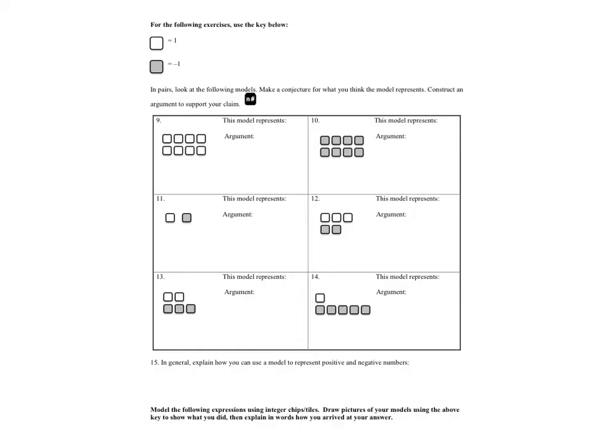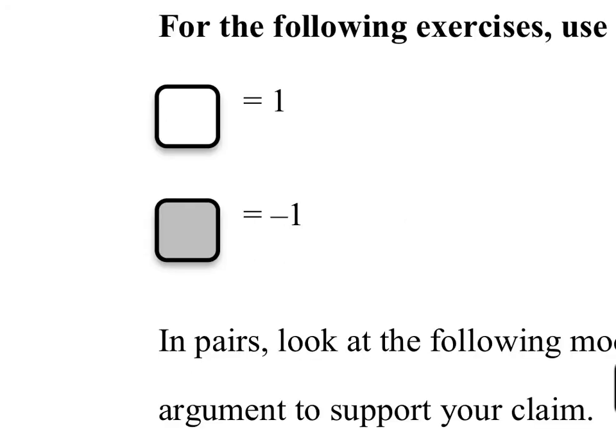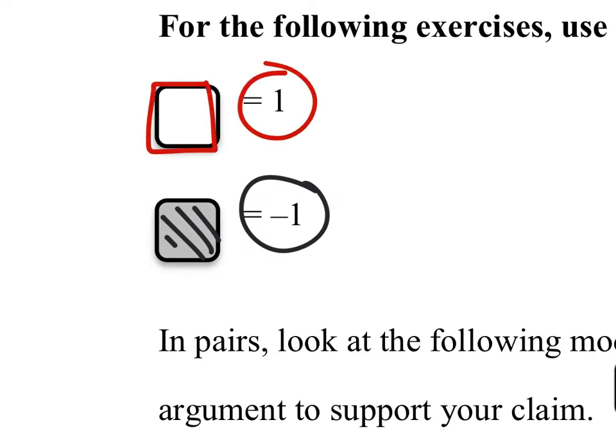So there are these things called tiles that we use sometimes to show as a diagram for these types of problems, especially to represent integers. Now some of you guys with the printout, sometimes it doesn't come out very clearly, but shaded boxes like this one have a value of negative one. But if it's just open like this one where it's white, then it is a positive one. Notice positive one does not have the positive in front of it, but you can put it there if you want.